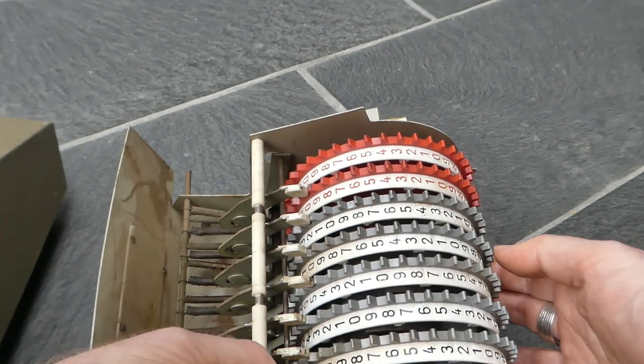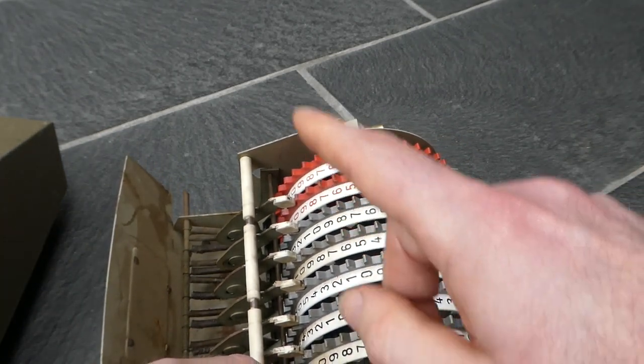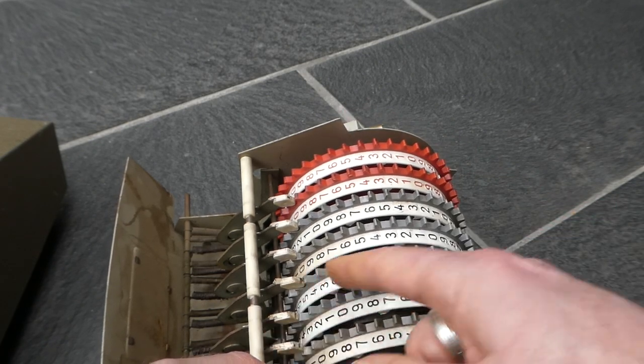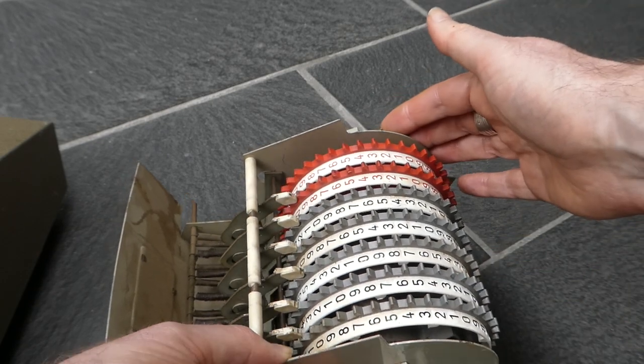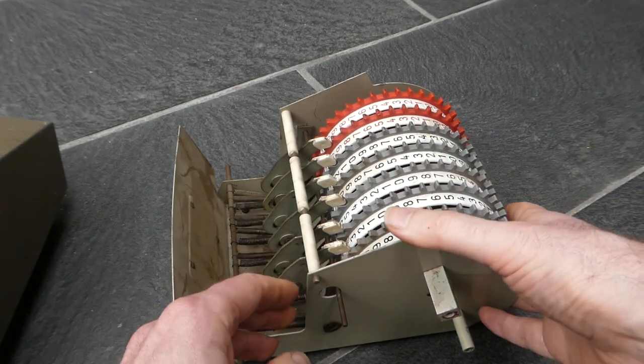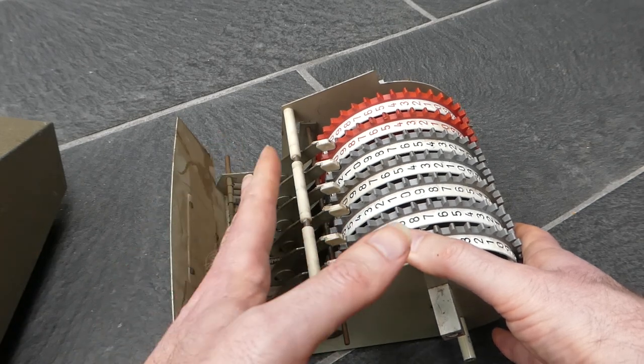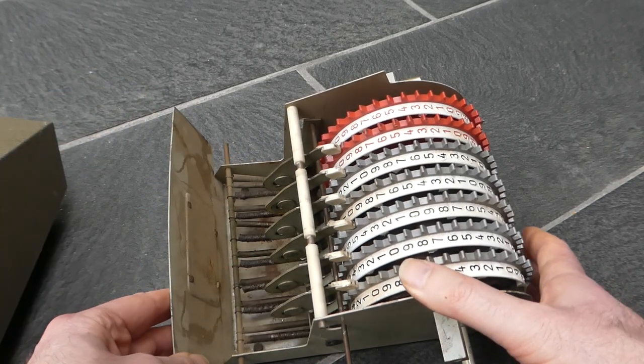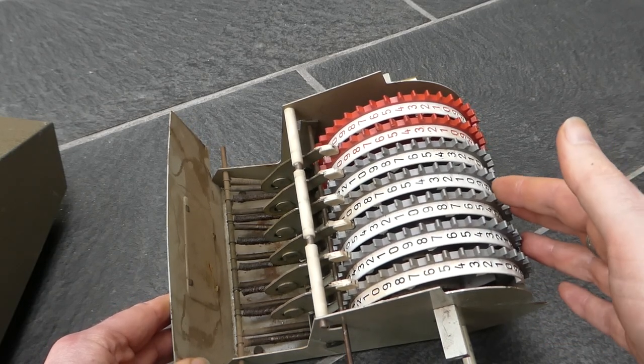So those cam wheels spiral outwards then drop back inwards. That drop is when the carry is performed. And when you push the clearing button, these carry arms and the clicking mechanism, the alignment mechanism, all get released, removed from the wheels, so that they are free to move back.